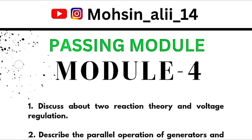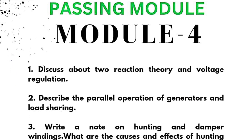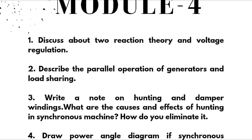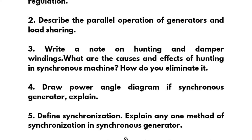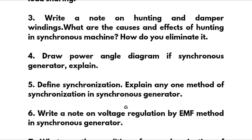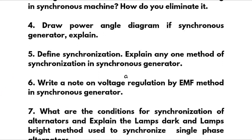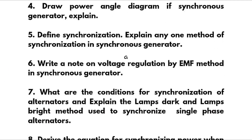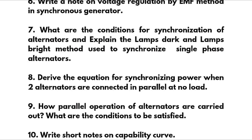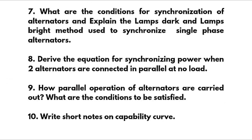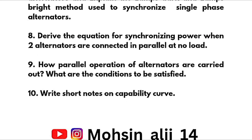The next passing module is Module 4. Important questions include: discuss two reaction theory and voltage regulation; describe parallel operation of generators and load sharing; short note on hunting and damper windings; causes, effects, and elimination of hunting in a synchronous machine; draw power angle diagram of synchronous generator; explain synchronization and one method of synchronization; short note on voltage regulation by EMF method; conditions for synchronization of alternators and the lamps dark and lamps bright method; derived equation for synchronizing power when two alternators are connected in parallel at no load; conditions for parallel operation of alternators; and short notes on capability.